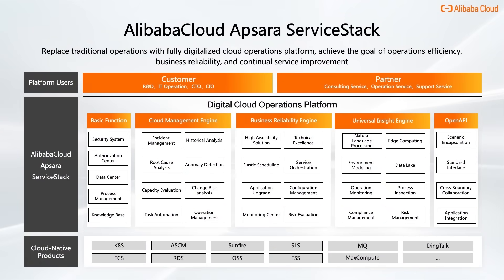Alibaba Cloud Apsara Service Stack is an intelligent and evolutionary cloud operations platform equipped with capabilities such as system management, problem diagnosis, decision-making, and self-healing under highly intricate circumstances, such as cross-region, multi-cloud, or hybrid cloud. With that, Service Stack could be a critical catalyst in the process of cloud transformation. Service Stack provides three operations engines — cloud management, business reliability, and universal insight — which enable customers to replace traditional operations with a fully digitized cloud operations platform and achieve the goals of operations efficiency, business continuity, and continual service improvement. Cloud Doc is a part of the grand theme of Alibaba Cloud Apsara Service Stack. We'll get inside of it in the next session.